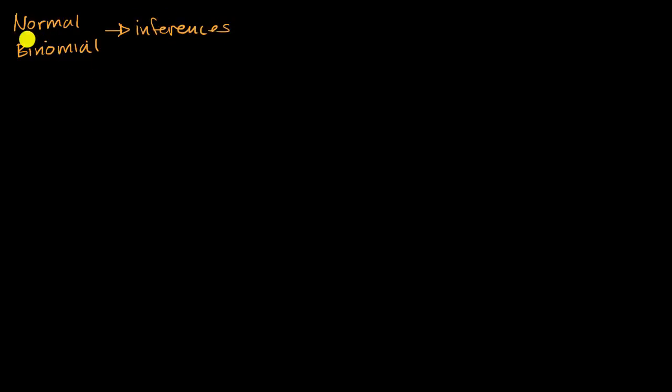But one of the key things about normal distributions or binomial distributions is we assume that they're the sum, or they can be viewed as the sum of a bunch of independent trials. So we have to assume that trials are independent.